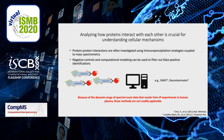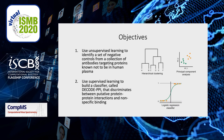existing methods such as SAINT and Decontaminator cannot readily be applied to immunoprecipitation experiments done in human plasma, because they are not optimized for the immense abundance of spurious interactions. Our objective then is to use machine learning to differentiate between protein-protein interactions and nonspecifically binding proteins in human plasma using mass spectrometry data from immunoprecipitation experiments.